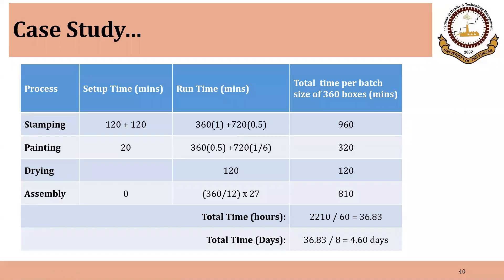The changeover time in stamping is 120 plus 120, so that is 240 minutes. The runtime is 360 into 1 plus 720 into 0.5 — these values are actually the denominator in question number one — and that turns out to be 960 minutes.